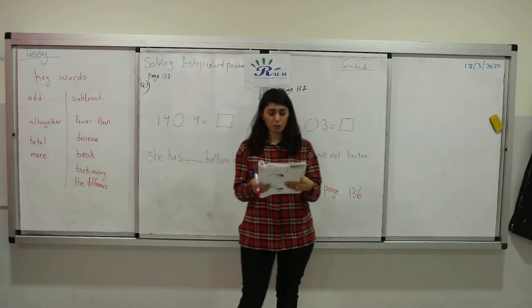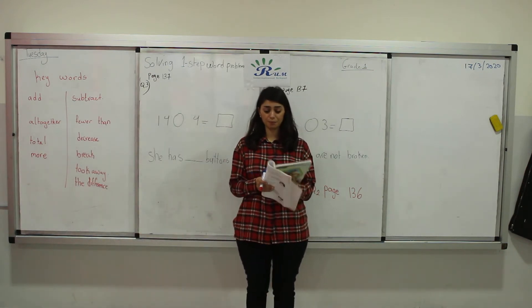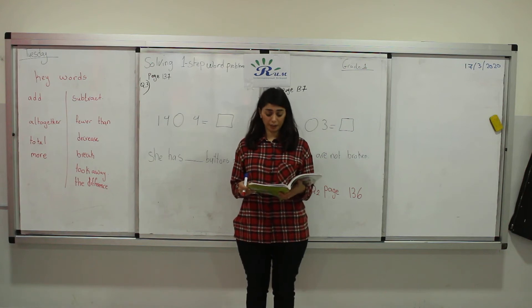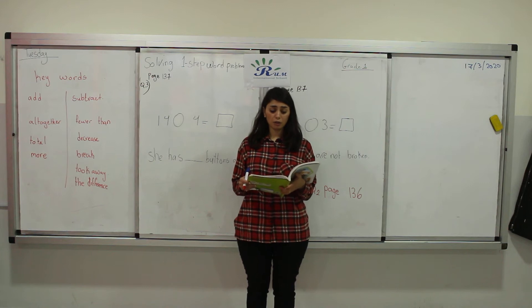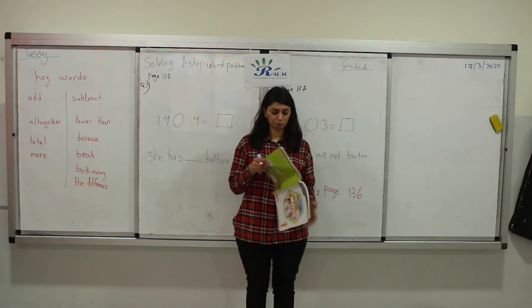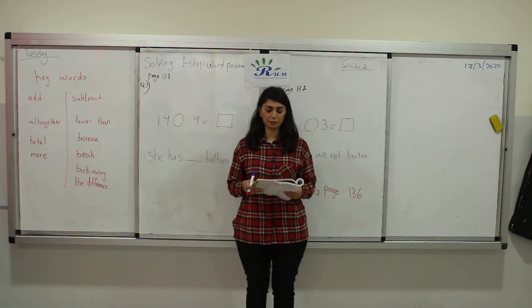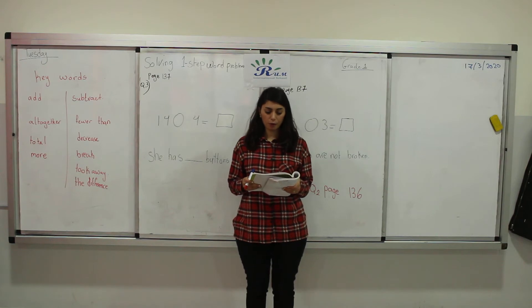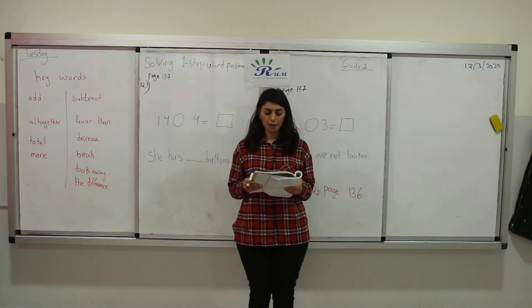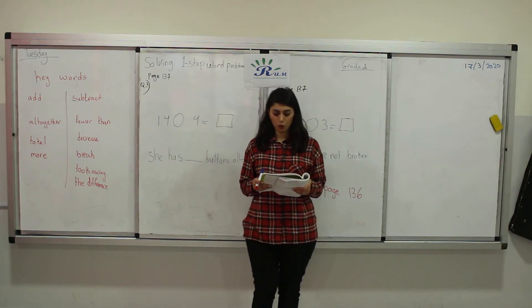Now let's open page 137 on your activity book and let's start solving question number 3. Anne has 14 blue buttons. She also has 4 red buttons. How many buttons does she have all together?